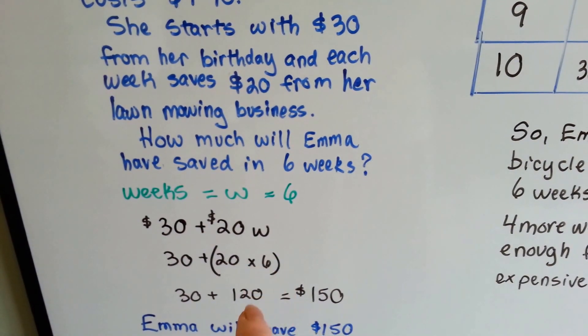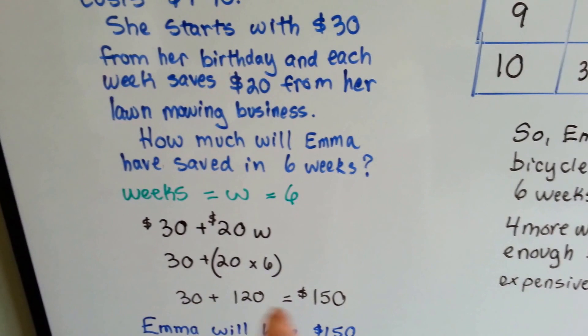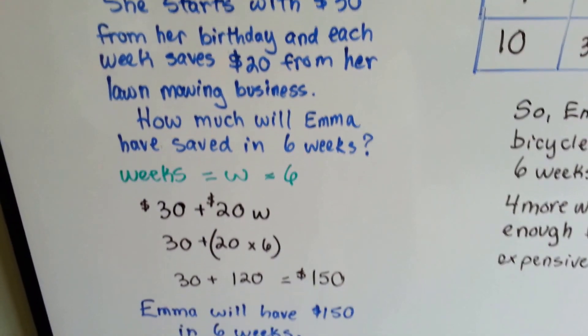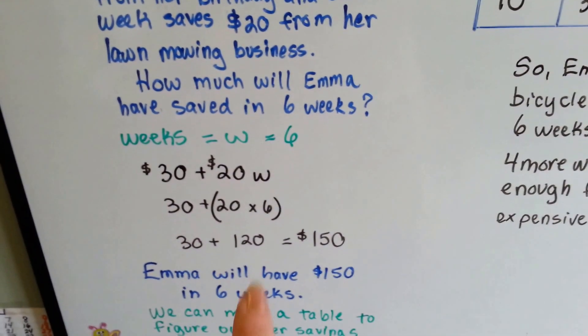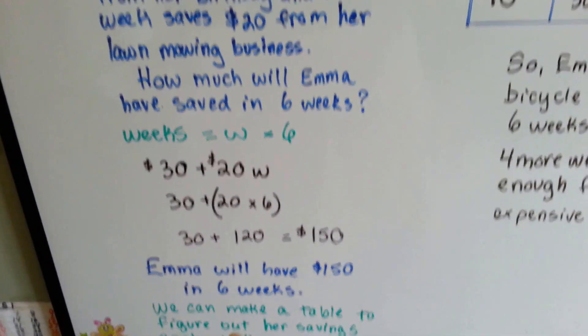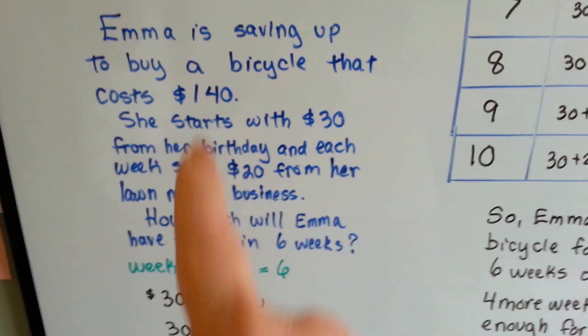Since W equals 6, we do the parentheses first: 20 times 6 is 120. We add the 30 and we have $150. So Emma will have $150 in 6 weeks, which is definitely enough to buy the bicycle.